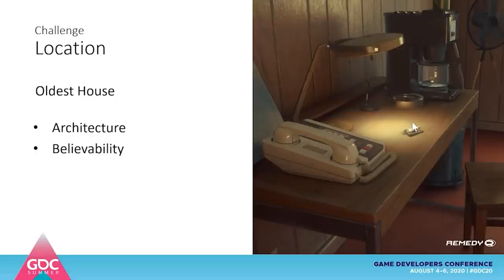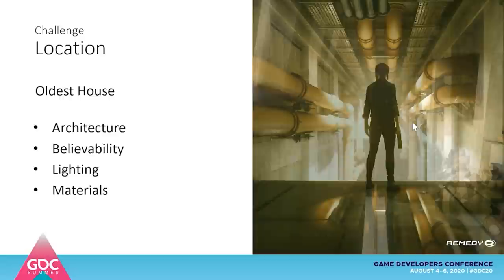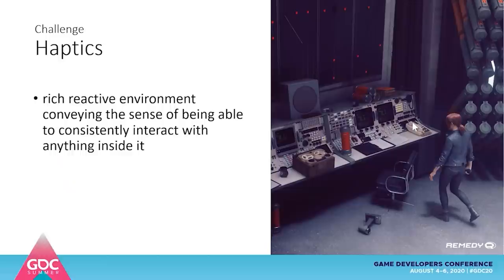It had to feel like a place inhabited by thousands of agents going about their day-to-day work — telephones, coffee mugs, copy machines, desks in their departments. That was crucial to telling the story of that place. The lighting had a very cinematic look, catering to RTX ray tracing, and brutalism is all about exposed materials — boarded concrete, lots of wood and glass.